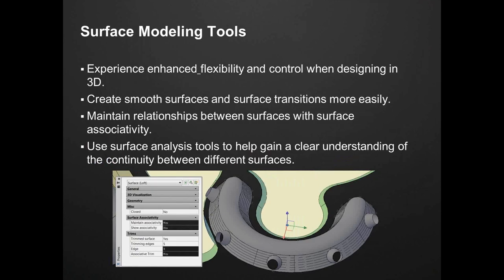More surface modeling tools: with AutoCAD getting more and more geared towards 3D, you now have more modeling tools. So more flexibility and more control when designing in 3D — create smoother surfaces and surface transitions more easily, maintaining those relationships between the different surfaces, and using surface analysis tools so you can gain a clearer understanding of what's going on in your project and your design.